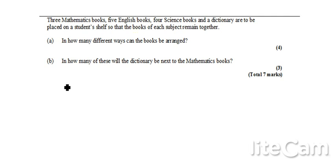Let's have a look at some counting problems. These can be quite difficult to understand. Certainly the questions themselves are quite difficult to piece together sometimes. So here we go: three mathematics books, five English books, four science books and a dictionary placed on a student's shelf so that the books of each subject remain together. How many different ways can the books be arranged?